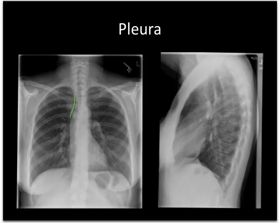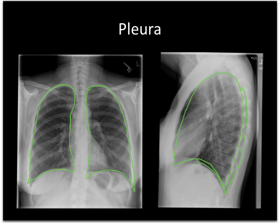Run your eyes around the pleura of each lung. You're looking for lucencies such as a pneumothorax, just in case you didn't spot it during your search of the lung parenchyma. But you're also looking for thickening and nodularity. You're looking to make sure that those costophrenic angles are sharp bilaterally, with no evidence of a pleural effusion.